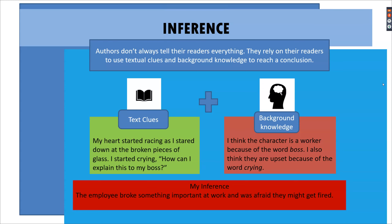The other strategy is inference. We're going to look at textual clues again and background knowledge. Here's an example: an employee looked down at broken pieces of glass and started crying — how can I explain this to my boss? The background knowledge gives us key words: we know it's a worker because of the word 'boss,' and we know they're upset because of the word 'crying.' It can be as simple as this to explain inference to your learners. Start out easy and then build it.